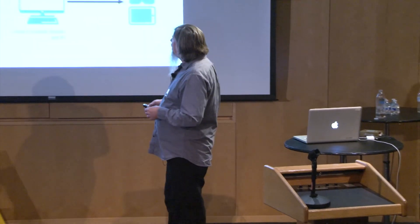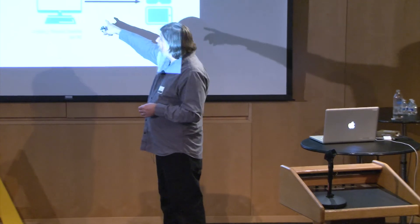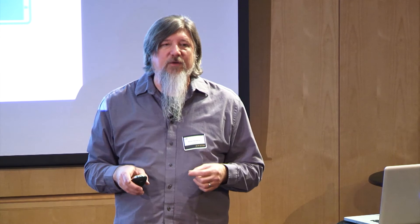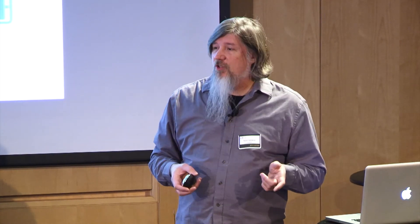The static version is very similar, but instead of at runtime, you pull the model in from the Forge service during the authoring phase. That gives you a little more control over what the model looks like — you can add additional Unity shaders and Unity features. The drawback is that it becomes a static asset: once it's imported, it's a Unity asset and it's not connected back to the original model. However, there's no reason you couldn't re-author it using the Forge APIs and pull the latest model every time you want to deploy a new version of your app.